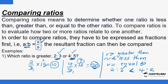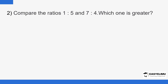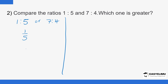For our second example, we have one is to five and seven is to four. Which one is greater? We follow the same approach and express them as fractions. So we have one over five and seven over four. The denominators are 5 and 4, so we multiply both by the LCM, which is 20.